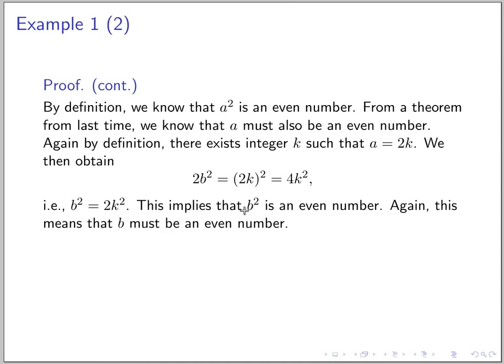This implies that b squared is an even number and by the same theorem we conclude that b must be an even number. So from this derivation we know that a must be an even number and b must also be an even number.